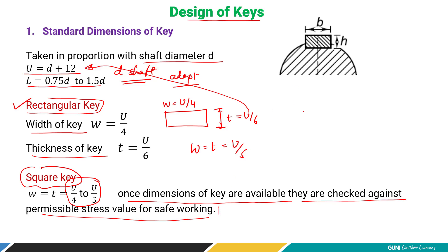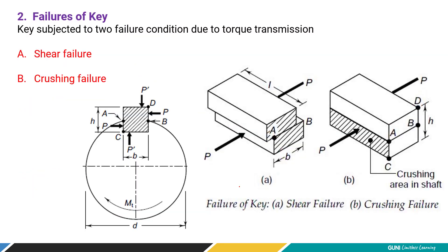We have the key dimensions from proportion and we are going to verify the induced stresses. To find the dimensions we need to consider the failure theories — in which situation the key is going to fail.